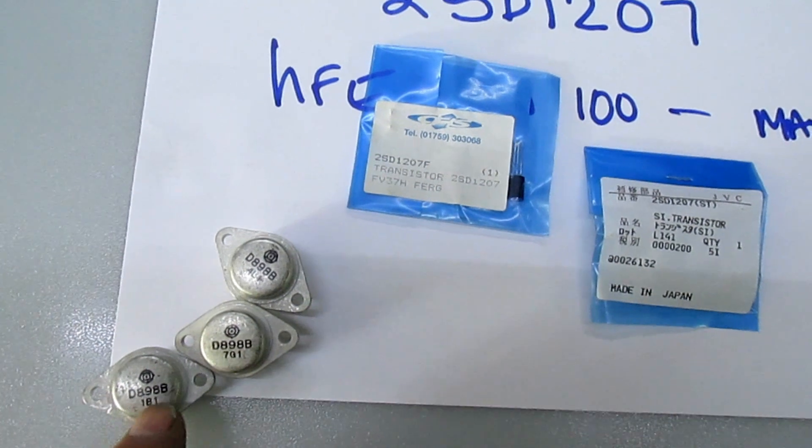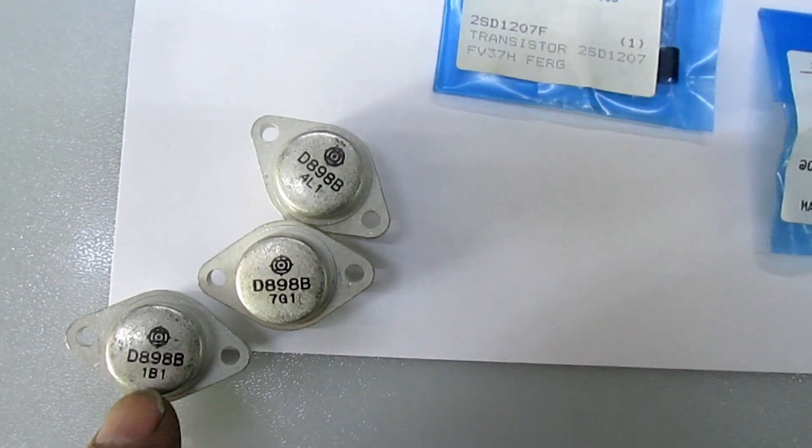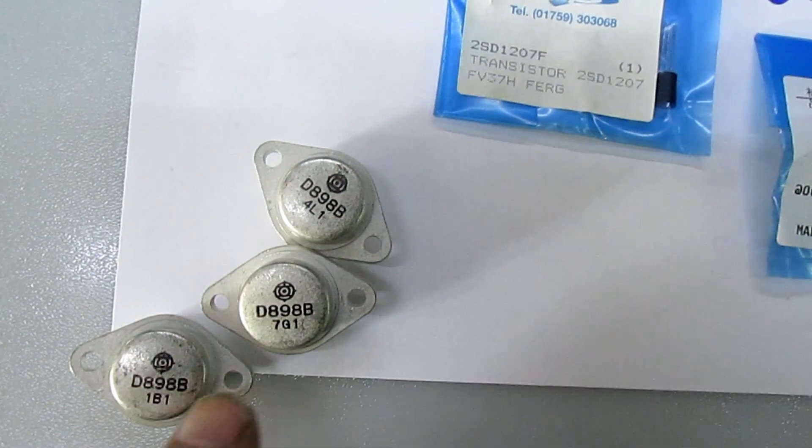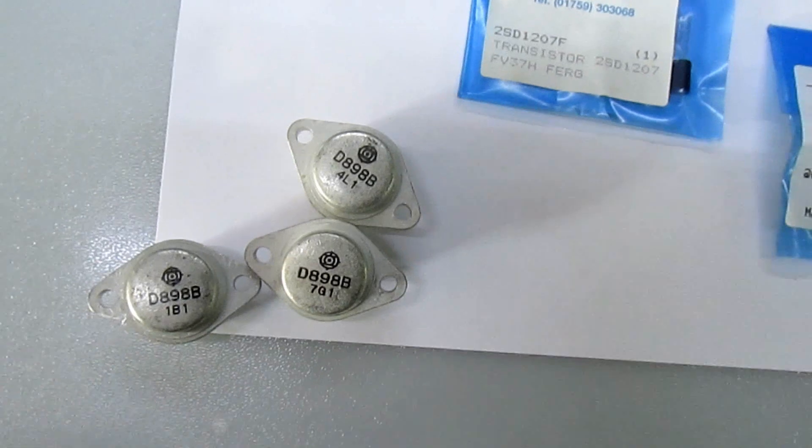If you look on there, these are marked up. If this was a reject it would have no marking at all on the case, you'd just have a blank transistor with nothing on.